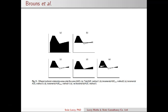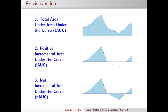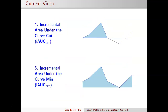In a previous video I uploaded to YouTube, I looked at three of the five calculations: A being the total area under the curve using the trapezoidal rule, C being the positive incremental area under the curve, and E being the net incremental area under the curve — positive less negative. For completeness, in this video I'll look at the other two calculations from Brunes et al's paper: B, the incremental area under the curve up to a cut point where you go below the baseline, and D, the incremental area under the curve above the minimum point.